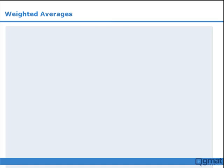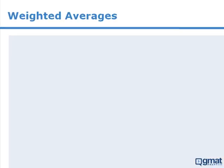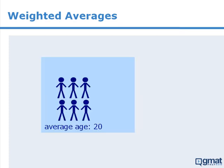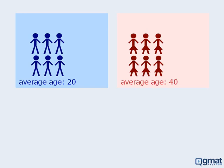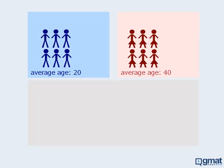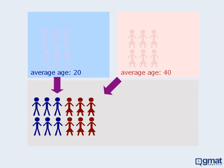In this lesson, we will learn how to calculate weighted averages, and we will learn some general properties of weighted averages. To set this up, consider the following. Let's say we have 6 men and their average age is 20, and we have 6 women and their average age is 40. Now what happens if we combine these two groups? What will be the average age of the combined population?